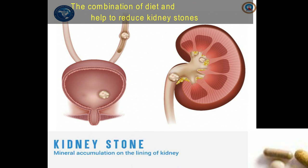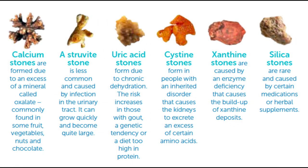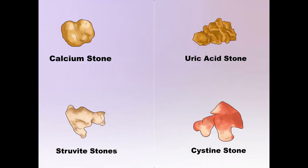First, we look at some types of kidney stones. Not all kidney stones are made up of the same crystals. The different types of kidney stones include calcium oxalate stones, calcium phosphate stones, struvite stones, uric acid stones, and cysteine stones.